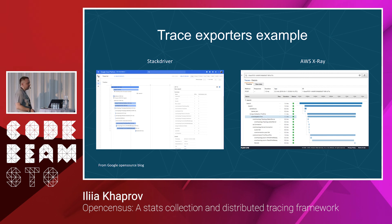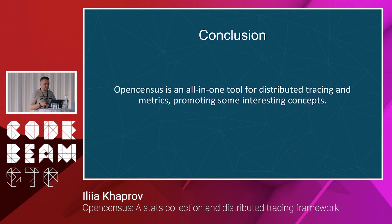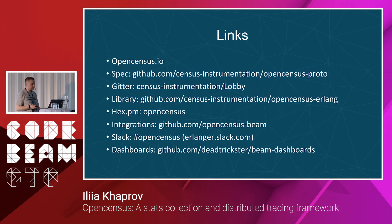As an example of interoperability, we have screenshots from the Google open source blog showing the same trace displayed in both Stackdriver and AWS X-Ray. So OpenCensus is an all-in-one tool for distributed tracing and metrics, promoting some interesting concepts. I hope you liked it. Let's finish with the Beam ecosystem.